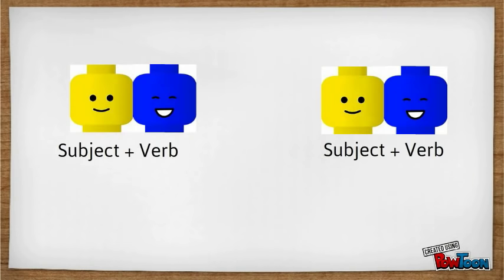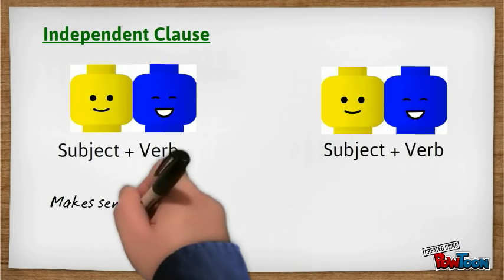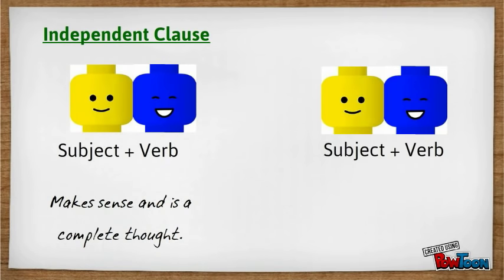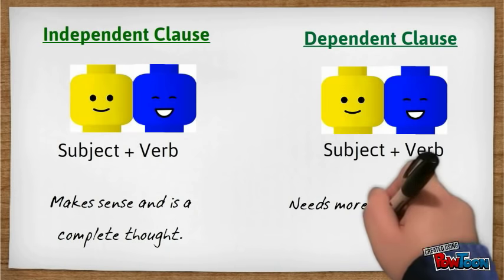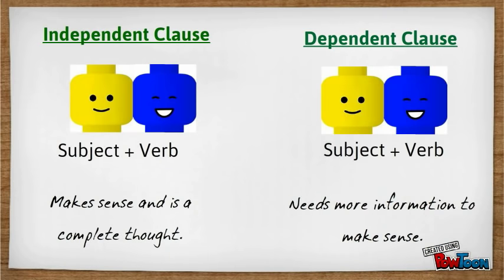They both have subject and verb teams. The only difference is that an independent clause makes sense and is a complete thought all by itself. A dependent clause needs more information to be a complete thought.